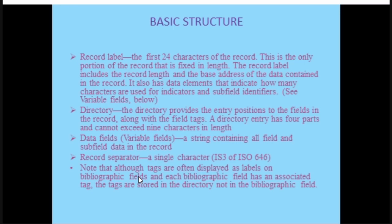The second part is the directory. The directory provides the entry position to the fields of the record along with the tag. The directory also has five parts and cannot exceed nine characters in length. The record label is fixed at 24 characters, but the directory can be below nine characters, just not more than nine. The record separator is a single character — the last character of the record. Data fields form a string containing all field and subfield data in the record.